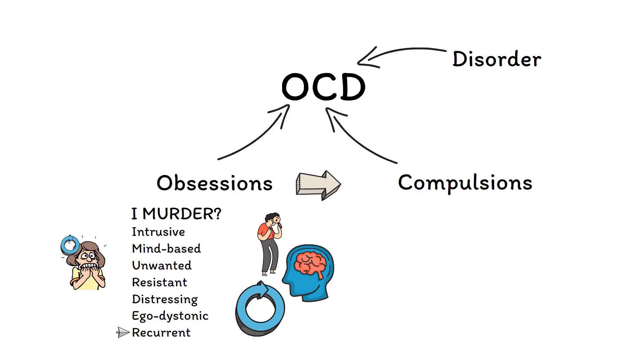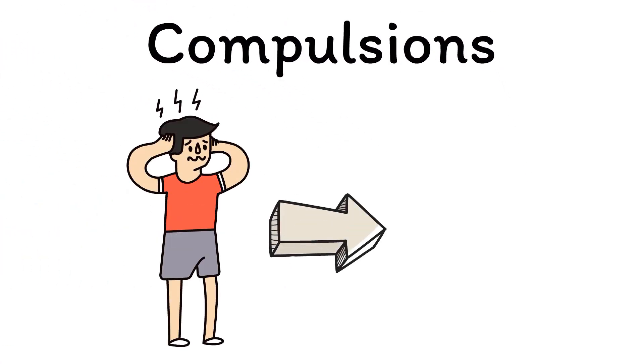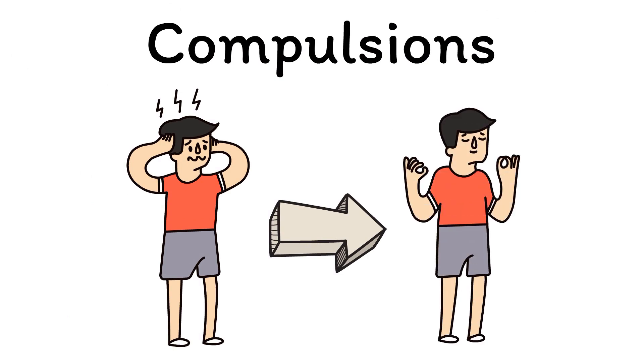So that brings us to compulsions. Compulsions are neutralizing behaviors that people use to help calm the intense feelings of anxiety and distress that obsessions bring. You can remember this easily by thinking of them as calm-pulsions.